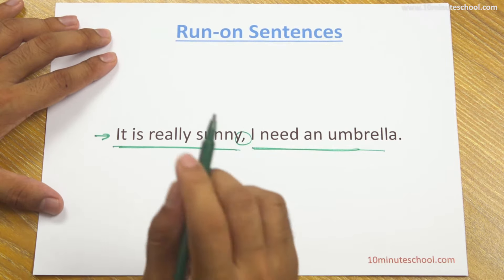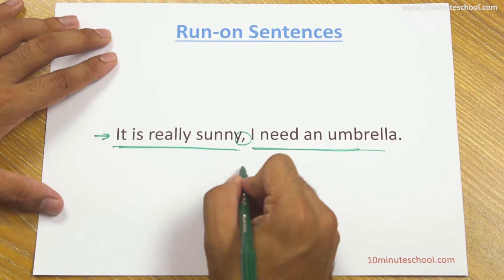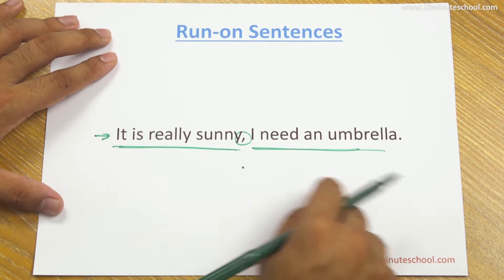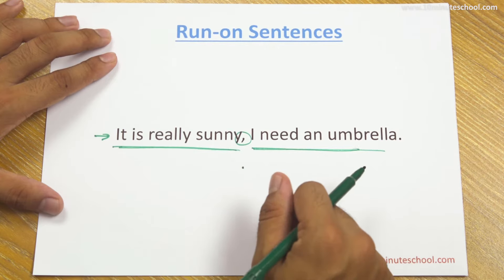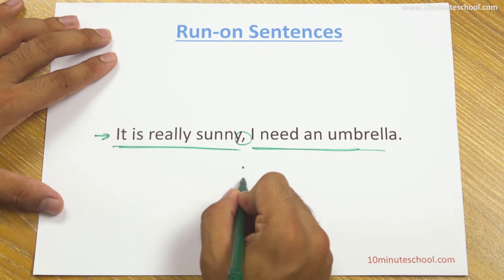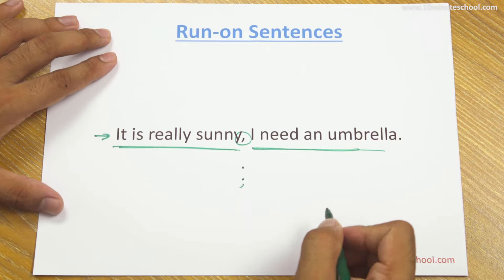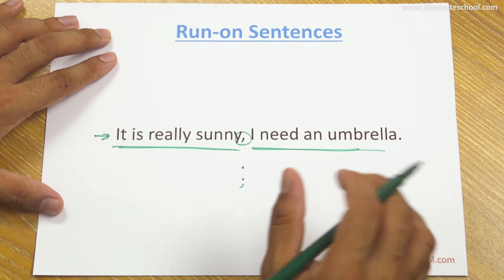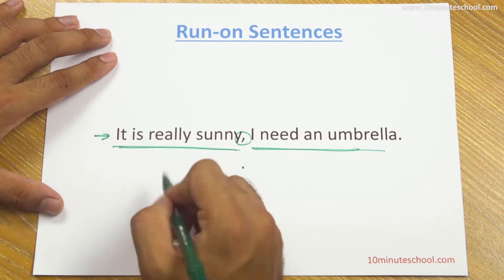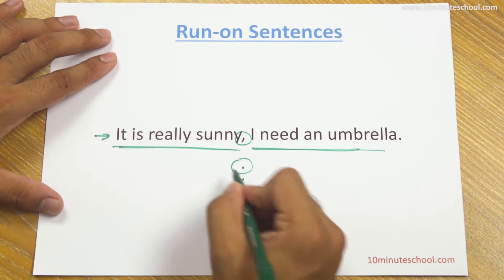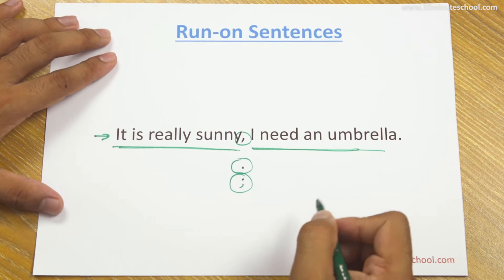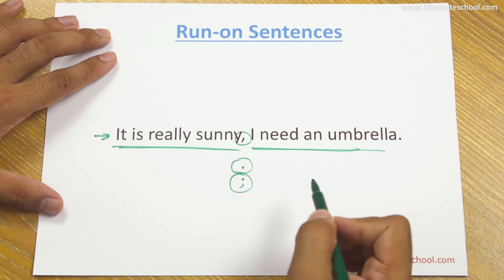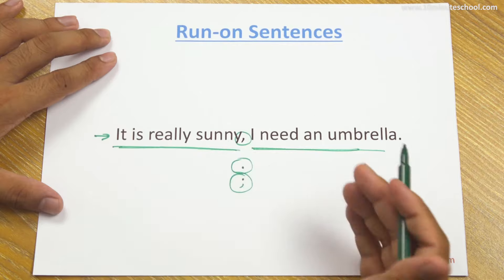We have two options. First, we can use a full stop: 'It is really sunny. I need an umbrella.' Second version — we can use a semicolon. This gives us a complete sentence while keeping the ideas connected. So you use either a full stop or a semicolon between the two sentences.